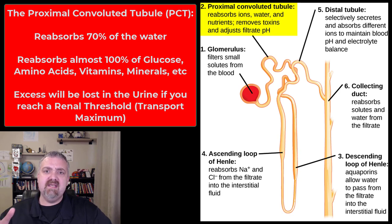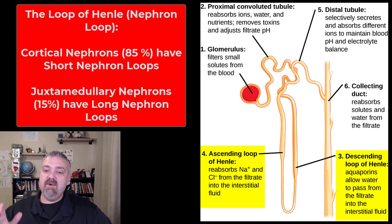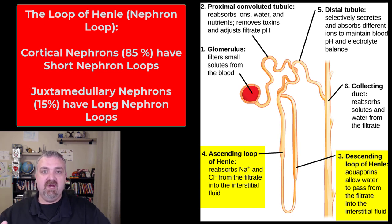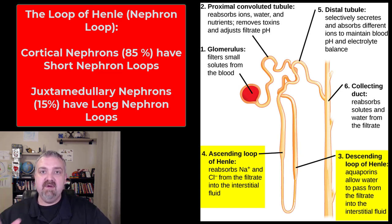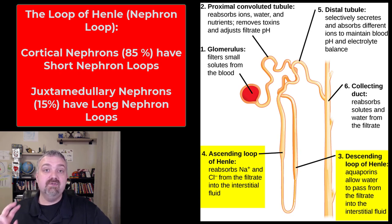One of the ways the proximal convoluted tubule reabsorbs so much water is by actively reabsorbing sodium — water then follows it. Now we're down to the loop of Henle. Its primary function depends on which side you're looking at, but overall it reabsorbs 15 more percent of that 50 gallons of filtrate, and it also reabsorbs sodium.